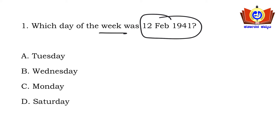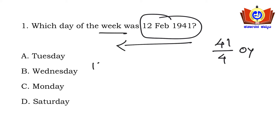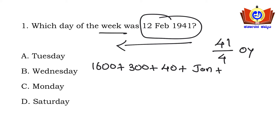First, check whether 1941 is a leap year. 41 divided by 4 doesn't go evenly, so it is an ordinary year. Now, 1941 can be split as: 1600 plus 300 plus 40, plus January full month of the 41st year, and up to 12th February.